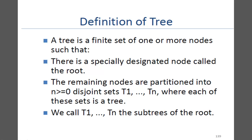So let us define tree. Tree is a finite set of one or more nodes. This is a recursive definition. Tree is a finite set of one or more nodes such that there is a special designated node called the root node. The remaining nodes are partitioned into disjoint sets T1, T2, till Tn, where each of these sets is also a tree.